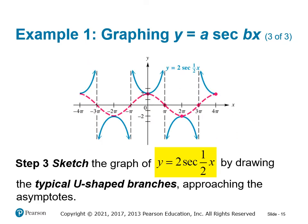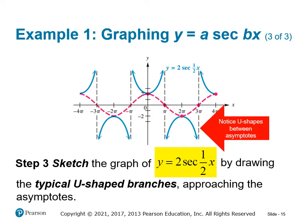The last part is to draw in the U-shaped branches. If it's on the positive side, they go up; if it's on the negative side, they go down. A key point is that there is an intersection point at the maximums or minimums of the reciprocal function. The U-shapes happen between the asymptotes, intersecting at the maximums and minimums, alternating on the positive and negative sides.